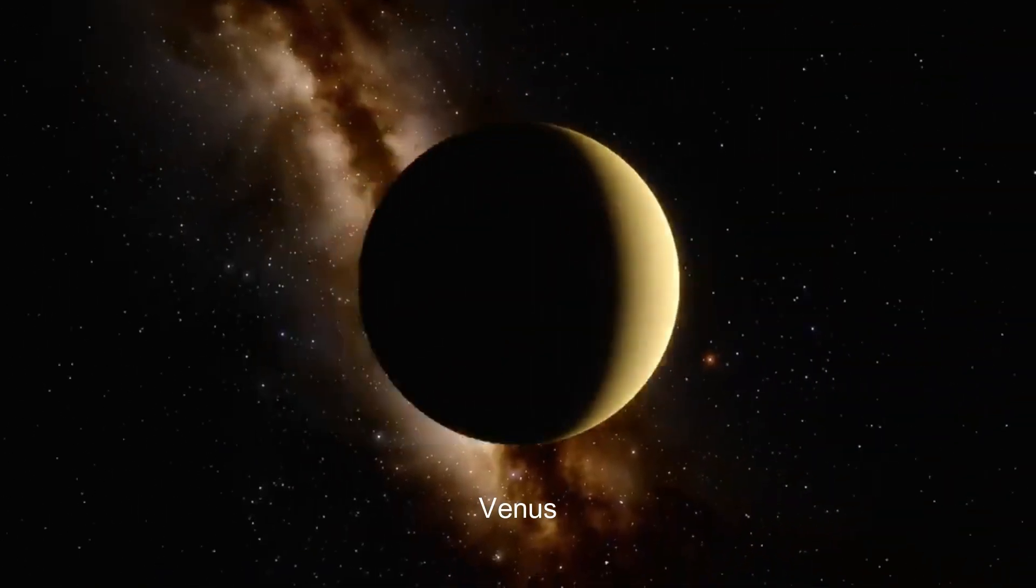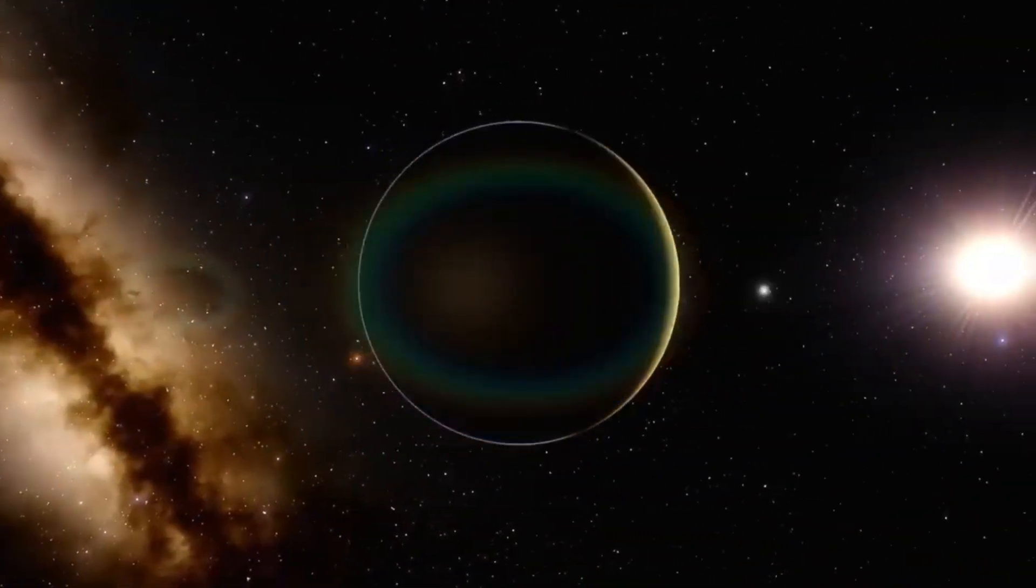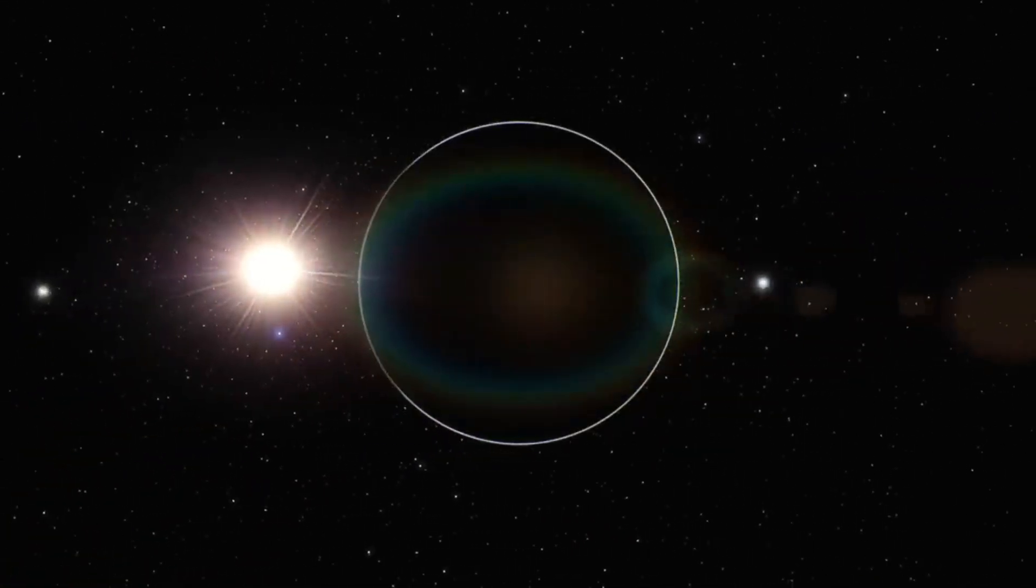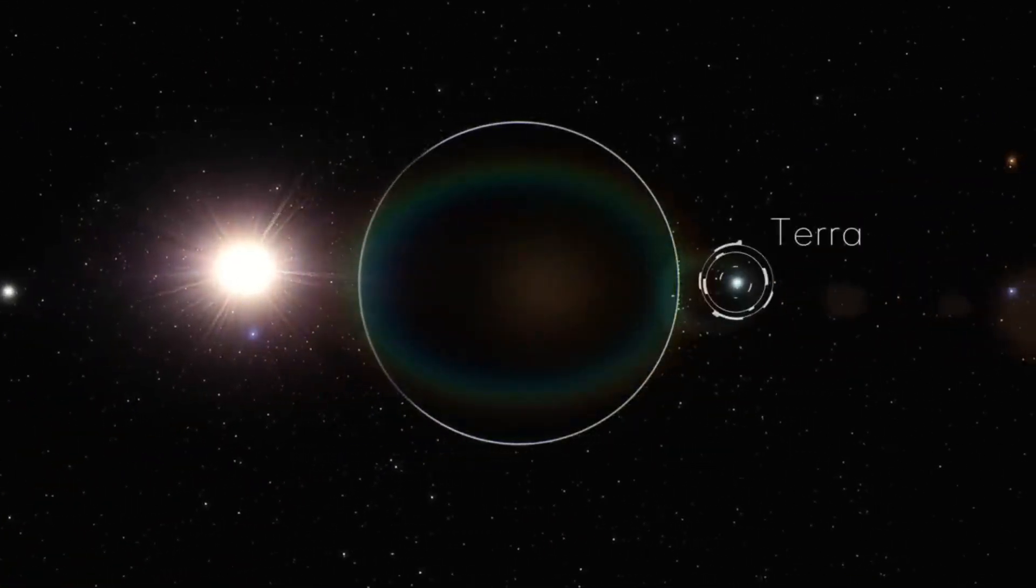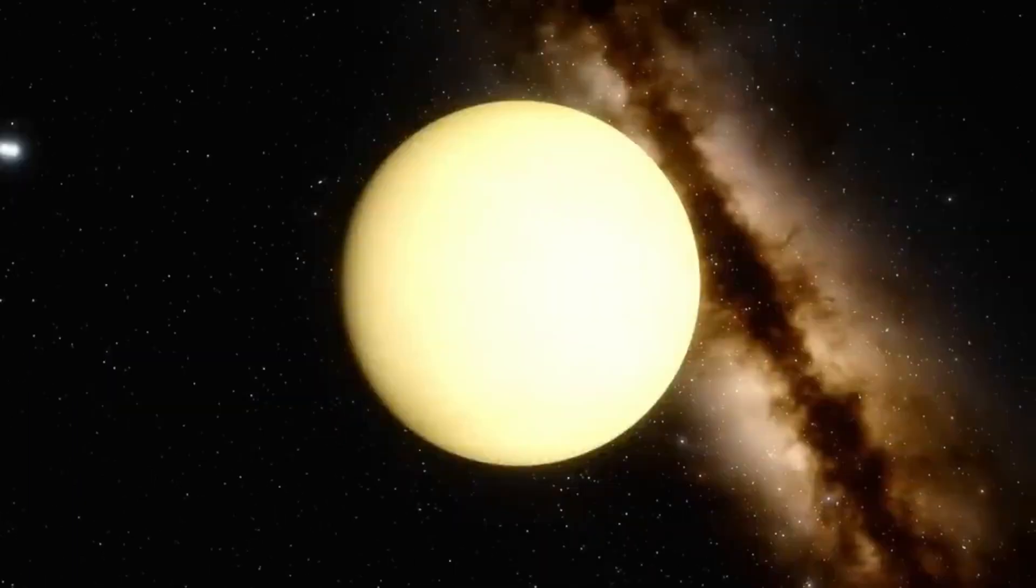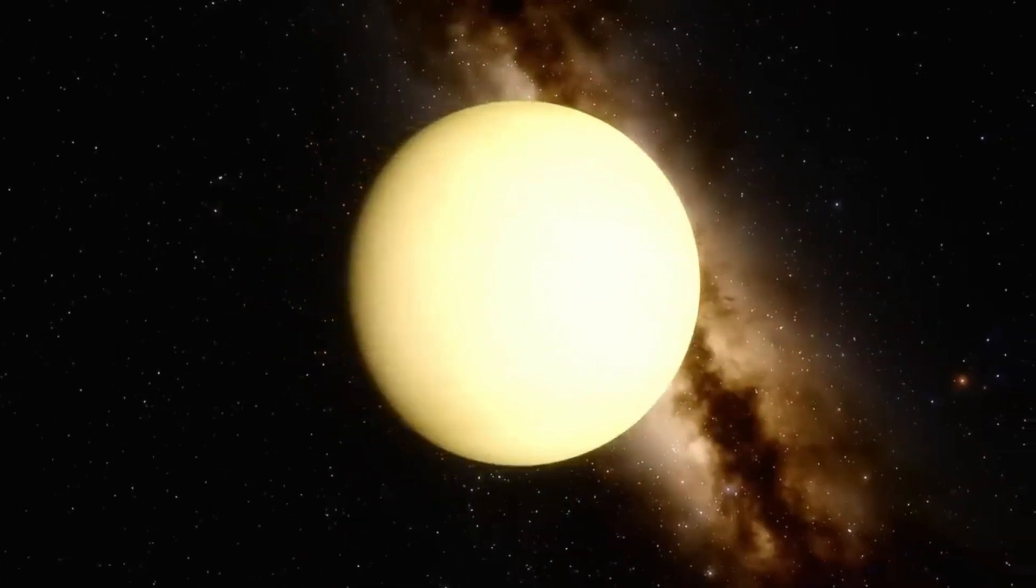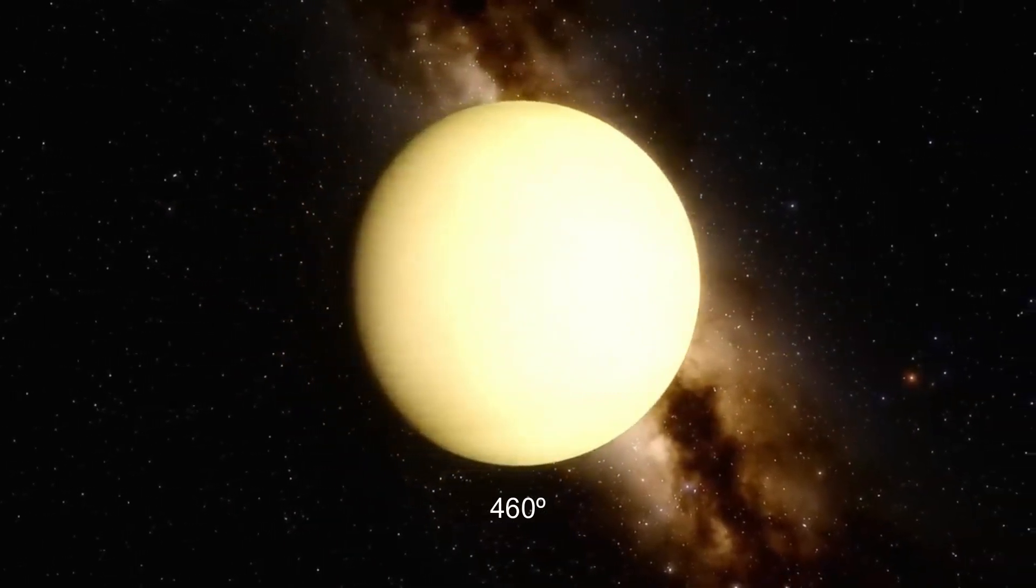Venus. After the sun and the moon, Venus is the brightest celestial body in the sky, which is why it is also known as the morning star. Venus is the closest planet to Earth and the hottest in the solar system. Its average temperature is 460 degrees.